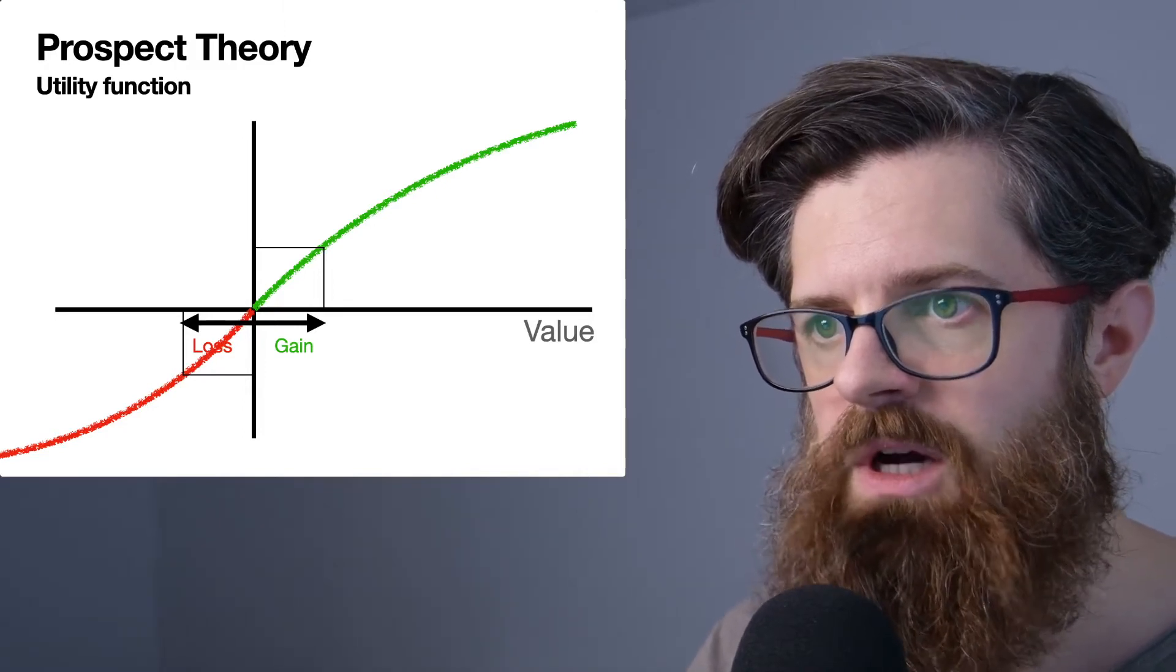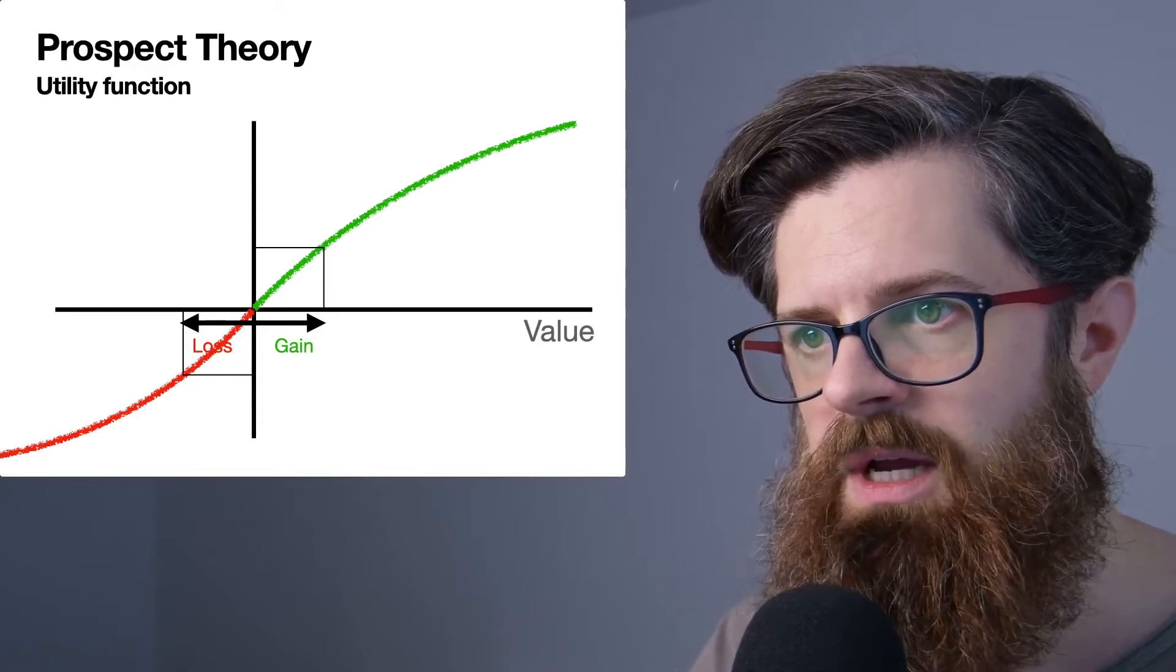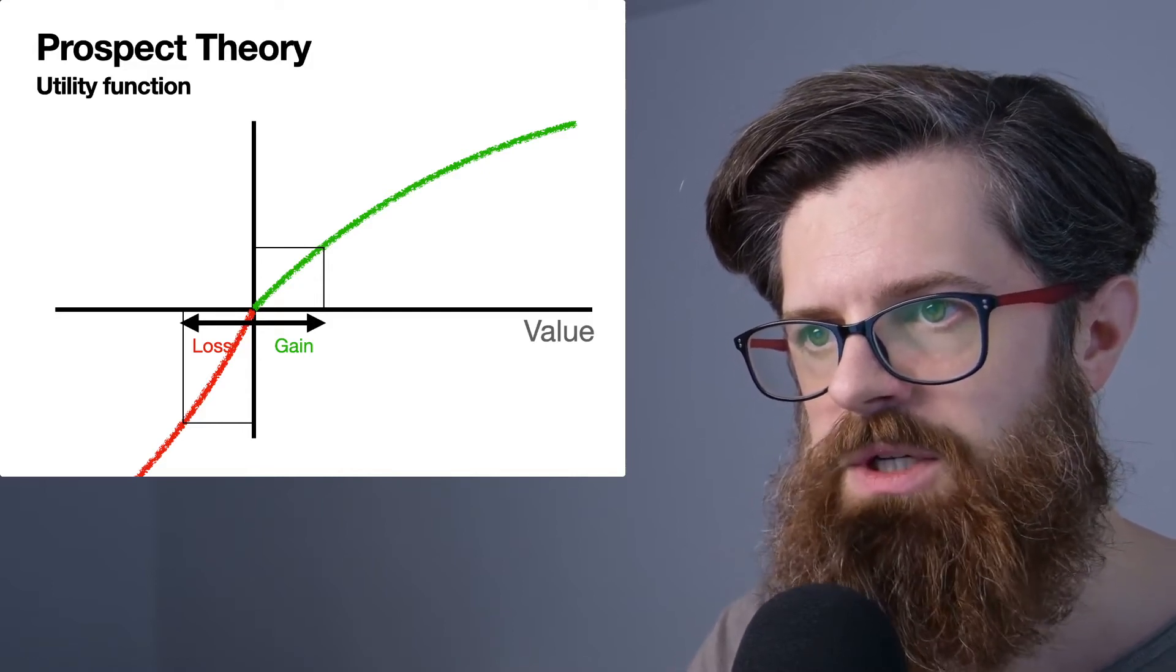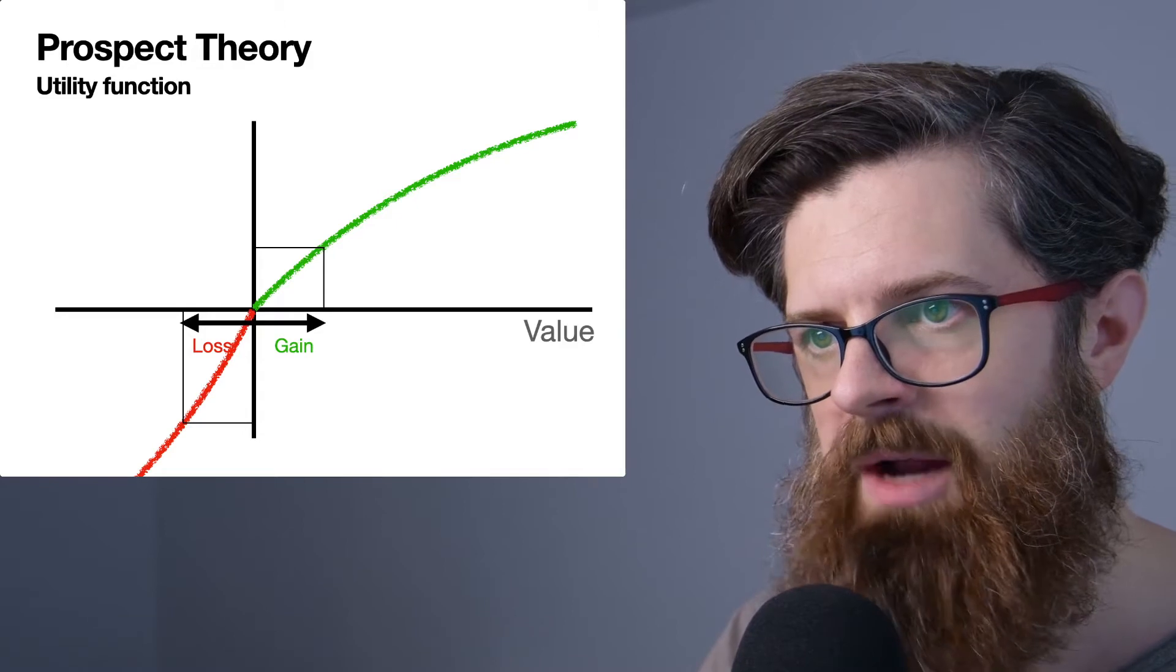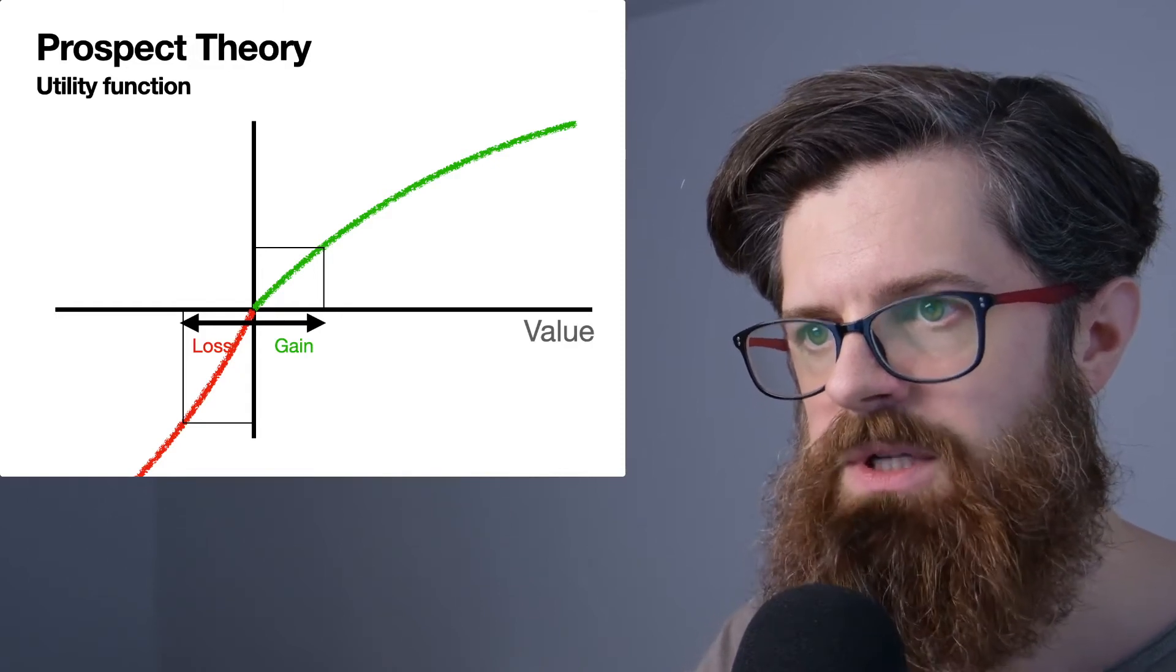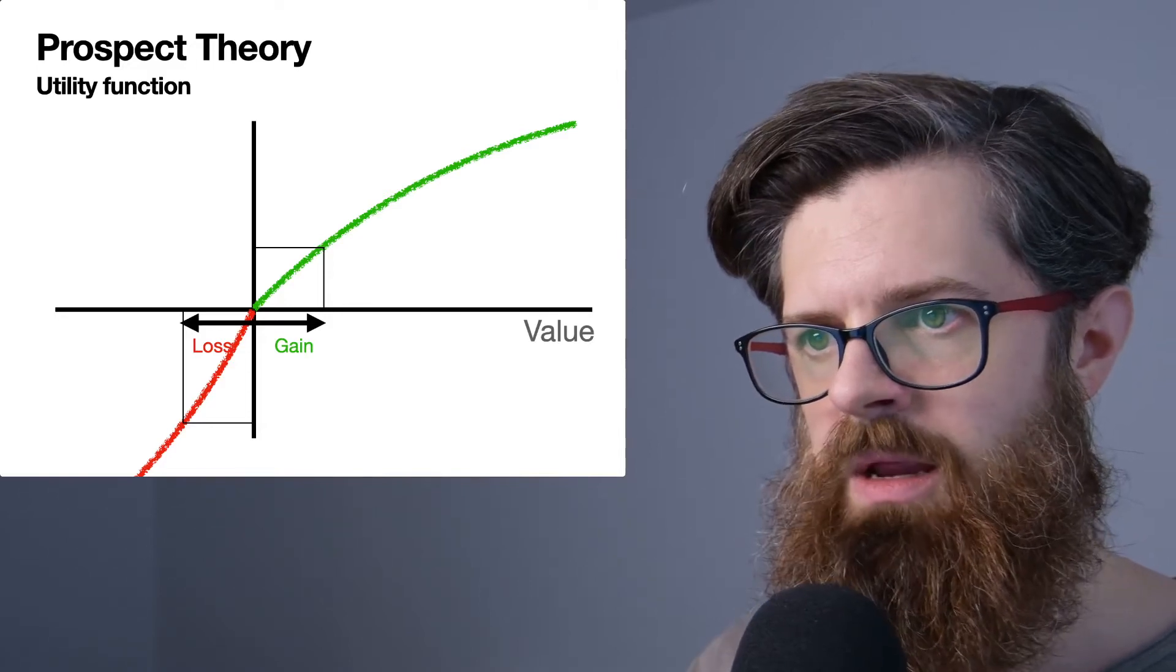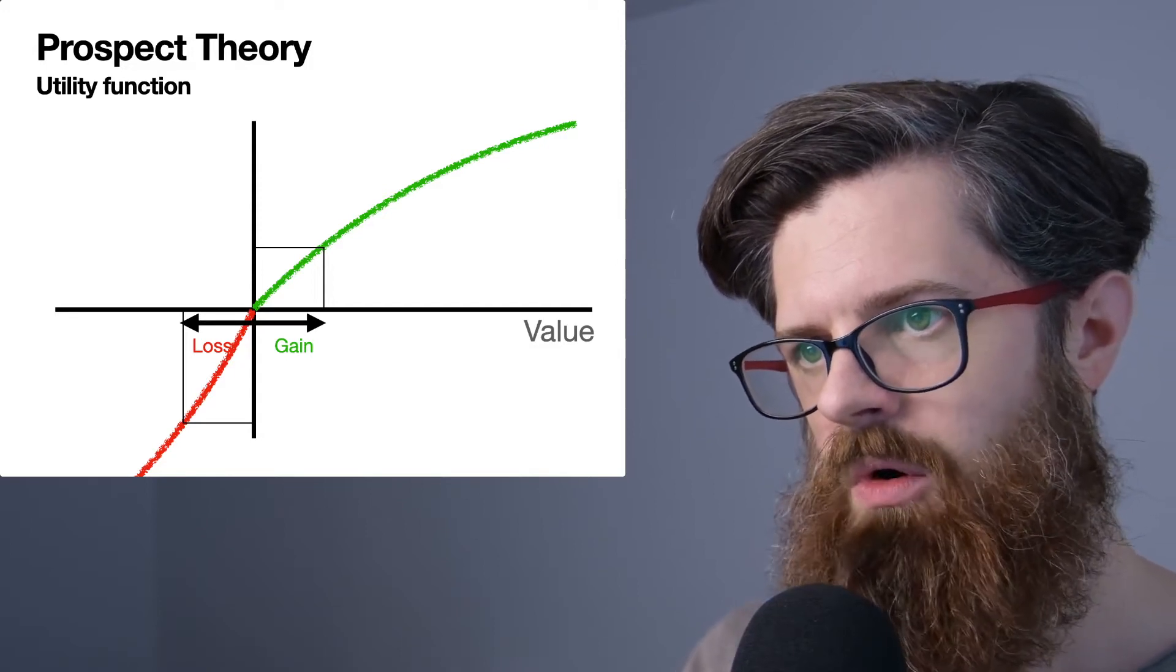So one of the first things that happens with the utility function is to essentially magnify the losses. Now the subjective utility function here is much steeper. If we consider a certain gain that might give us a certain amount of utility, an equivalent loss would actually give us more negative utility. By changing our proposal about how value is related to utility in this way—making the curve steeper for losses—this goes a long way to account for loss aversion.